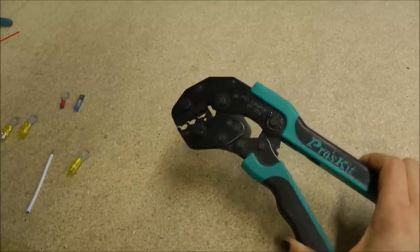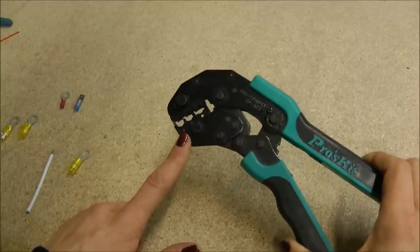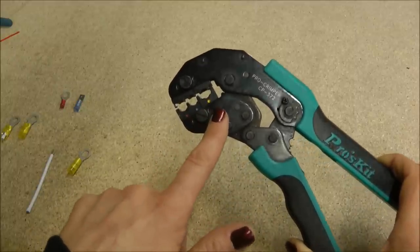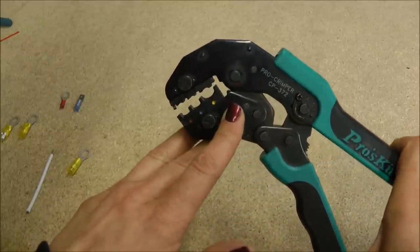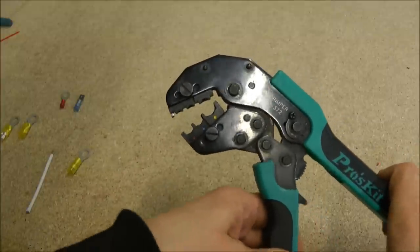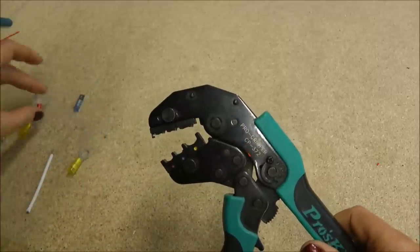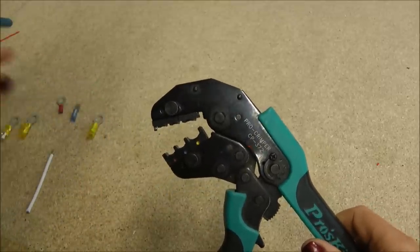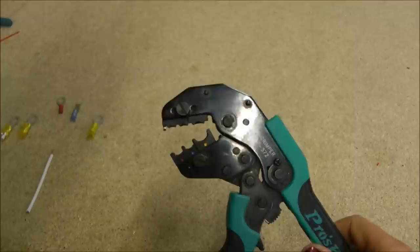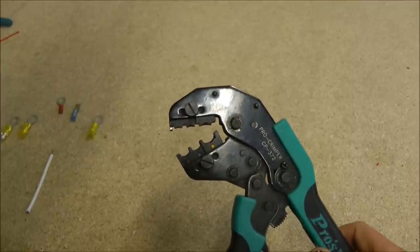You can see the jaw here has a red, a blue, and a yellow and those are to designate the sizes of your terminals. You'll see there's red, blues, and yellows of the terminals for the different sized wires that you'll be using.